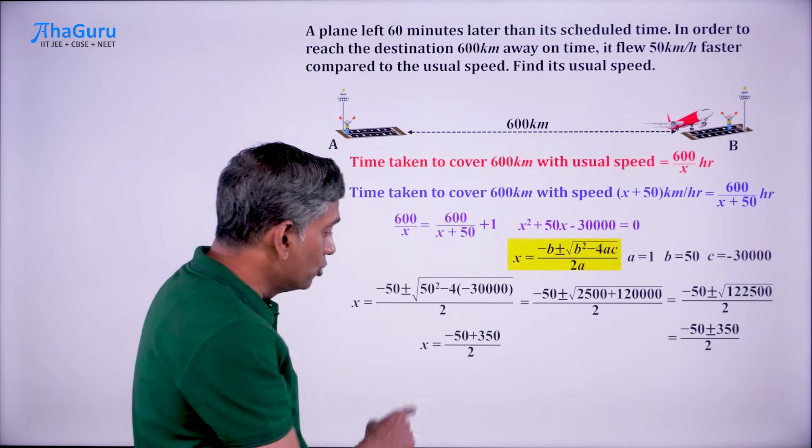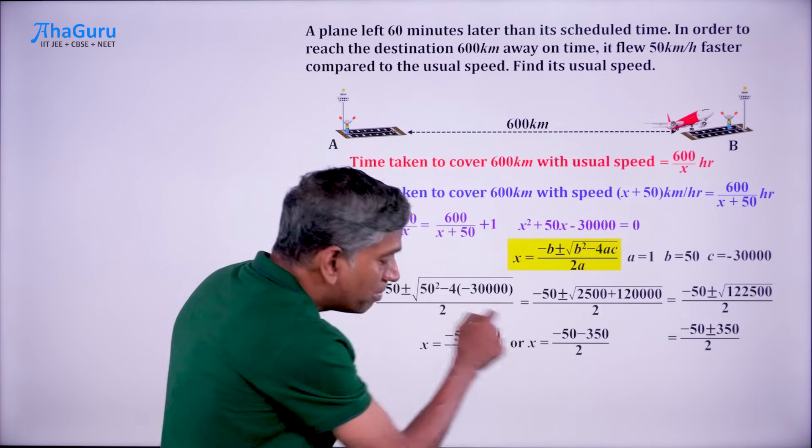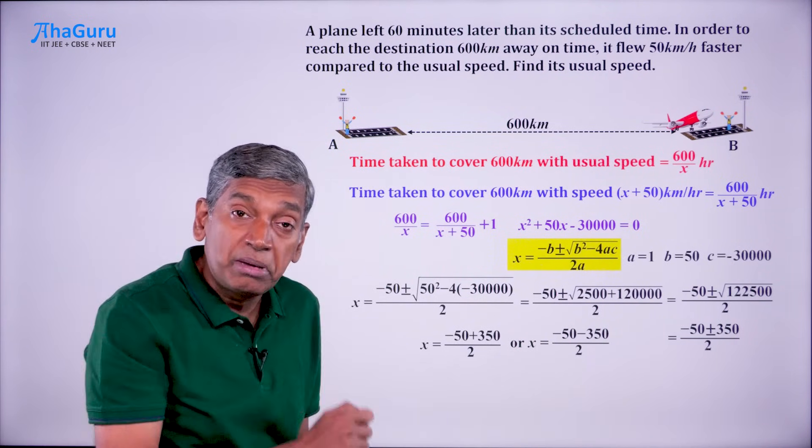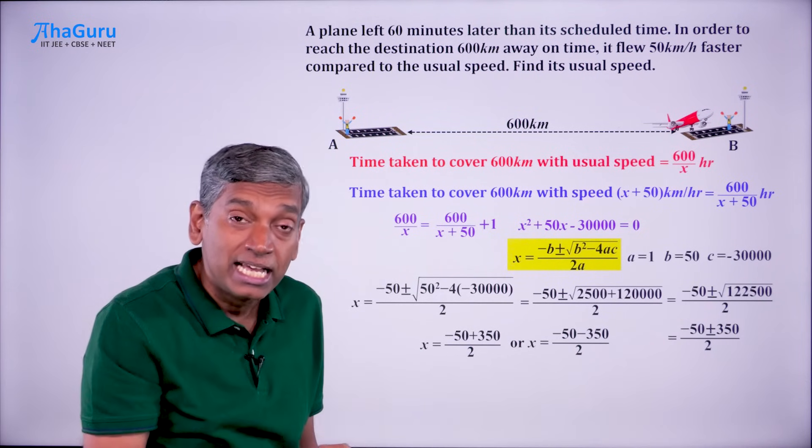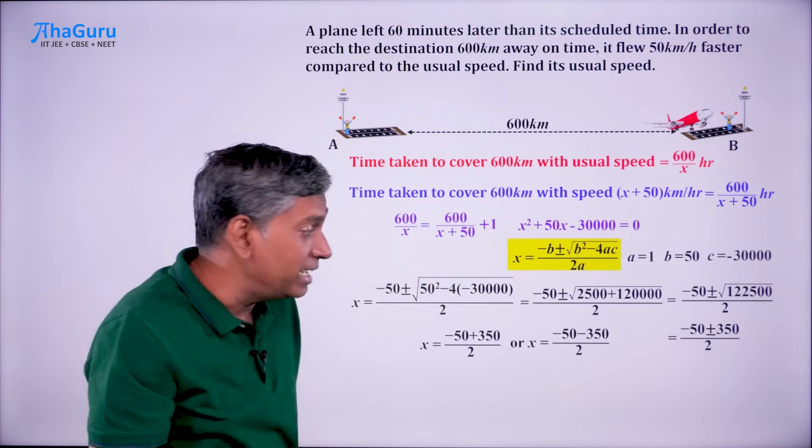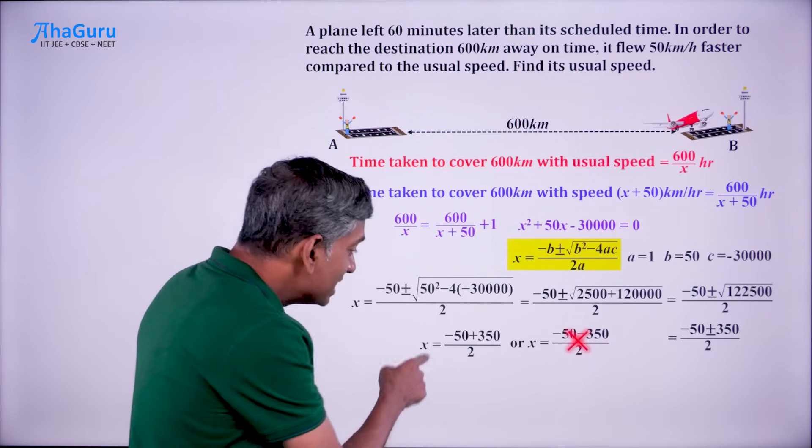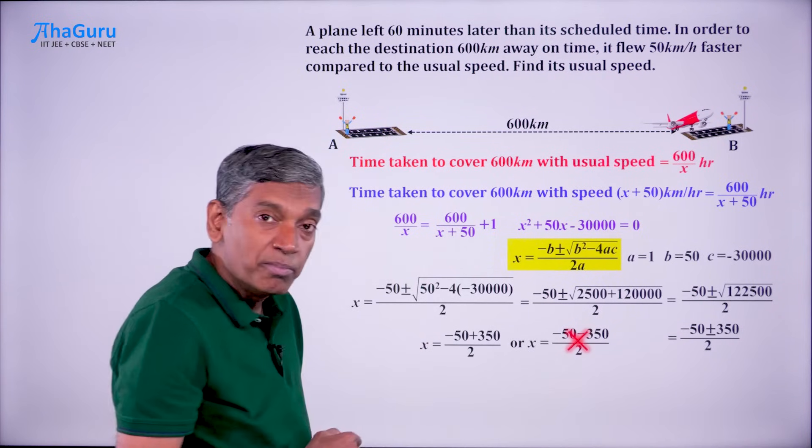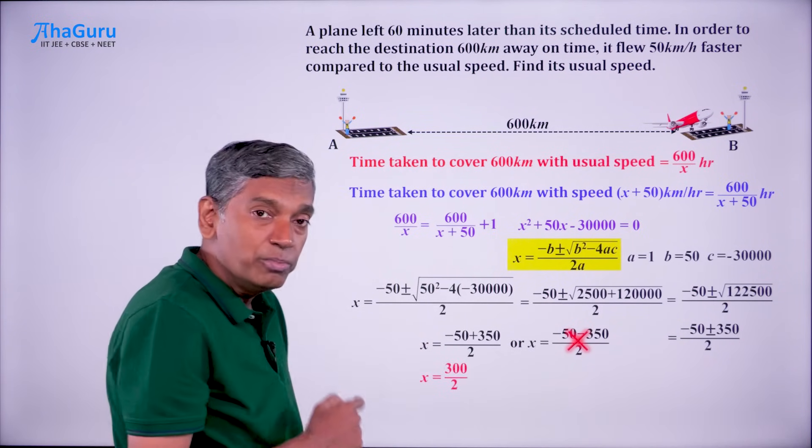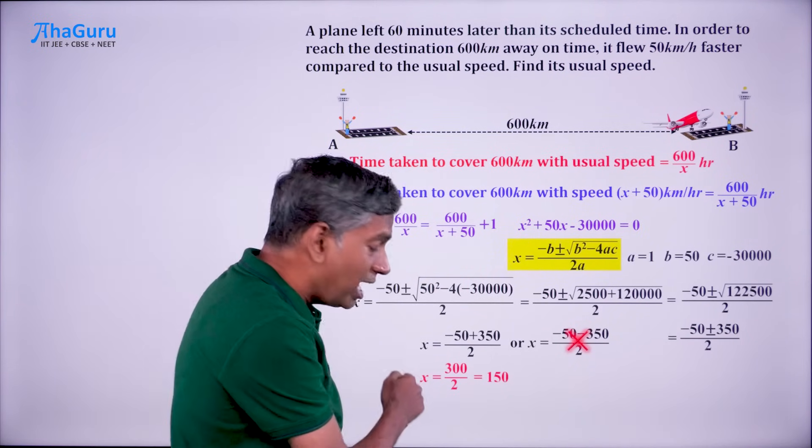There are two possible values, minus 50 plus 350 by 2 and minus 50 minus 350 by 2. But remember, x is the usual speed of the plane. Speed cannot be negative. So, this is the only possible option. This gives us 350 minus 50 is 300 by 2 which gives us 150 as the value of x.